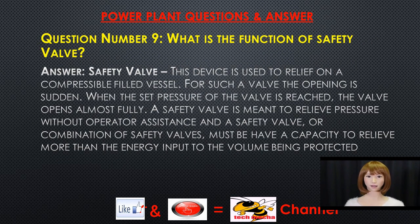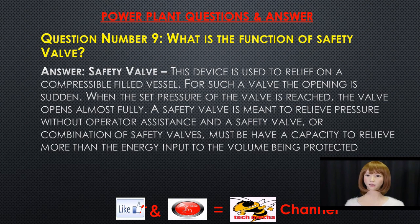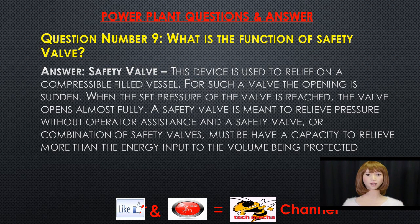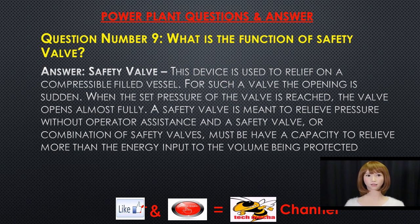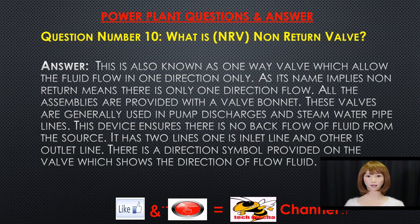Question number nine: what is the function of a safety valve? A safety valve is used to relieve pressure on a compressible filled vessel. The opening is sudden — when the set pressure is reached, the valve opens almost fully. A safety valve is meant to relieve pressure without operator assistance, and a safety valve or combination of safety valves must have the capacity to relieve more than the energy input to the volume being protected.